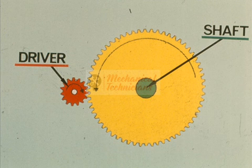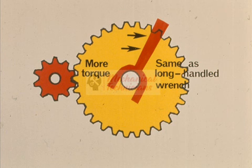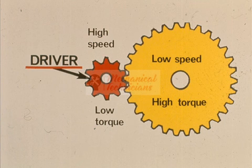Here is the same driver meshing with an even larger gear. Since the yellow gear is considerably larger than the other gear, it is easier to turn because the large gear supplies extra leverage by its size. The large gear on the shaft has the same effect as a long-handled wrench on the shaft — it supplies the leverage or torque that is needed. The larger gear will turn at a lower speed, but will transmit much more torque. The high speed and low torque of the small gear becomes low speed and high torque in the large gear.